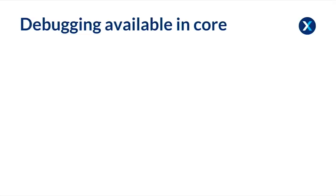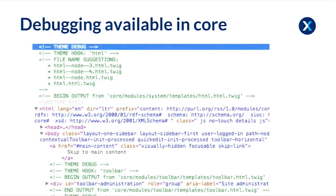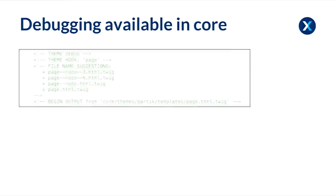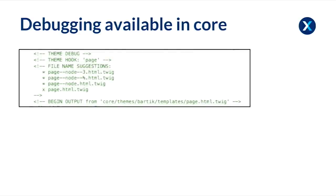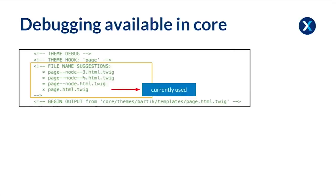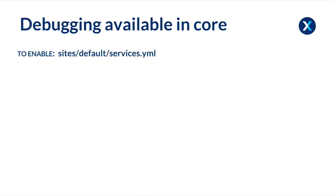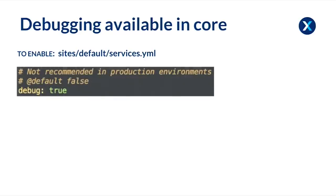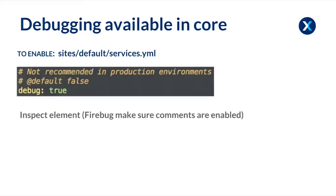Debugging is also available in core. At the moment in Drupal 7, if you want to know where your templates are or what to call them, you have to enable the Devel module. In Drupal 8 you don't actually have to install anything — it shows you debugging information in your HTML source. For example, for the page template it shows you the file name suggestions, which one is currently used, and the location of the template. To enable it, you just go into sites/default/services.yml file and change the debug setting to true instead of false, which is the default.